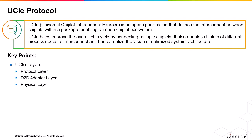The UCIE protocol has three independent layers: protocol, D2D adapter, and physical layers. These independent layers enable vendors and SOC builders to easily mix and match different layers from different IP providers at low integration costs and faster time to market.